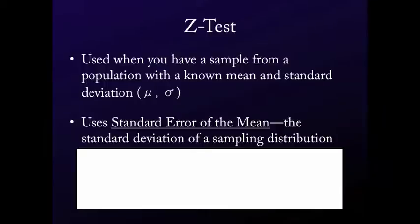The standard error of the mean is basically the standard deviation of a sampling distribution. I want to explain the basic logic of this. Imagine you have a normal distribution — you know the mean is 100 and the standard deviation is 10. What's the probability that you're going to pull a score of 120 out of that distribution randomly? You mix them all in a hat, reach in, and pull out one score that's 120. The probability of pulling a score of 120 when the mean is 100 and standard deviation is 10 is about five percent — that's a z-score of two, which corresponds to about the five percent level. So you've got about a one-in-twenty chance of pulling a single score of 120.